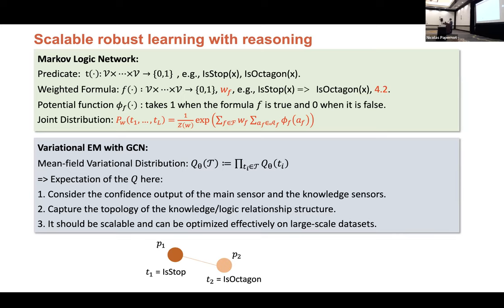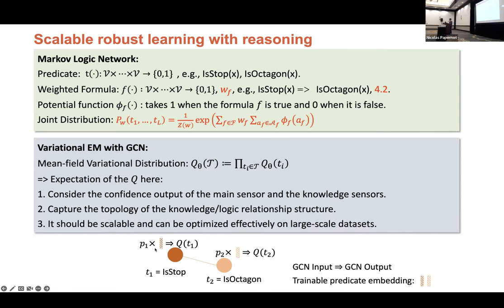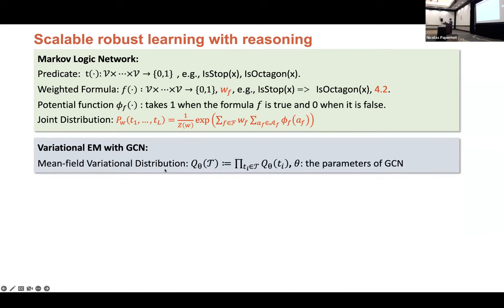So instead we take another way is that we will train another trainable predicate embedding. For example, we train one additional embedding for the stop predicate. And we will also train another predicate embedding for octagon. Then we use the multiplication of the confidence and embedding as an input of the GCN and we output the corresponding variational distribution qt1 and qt2 here.